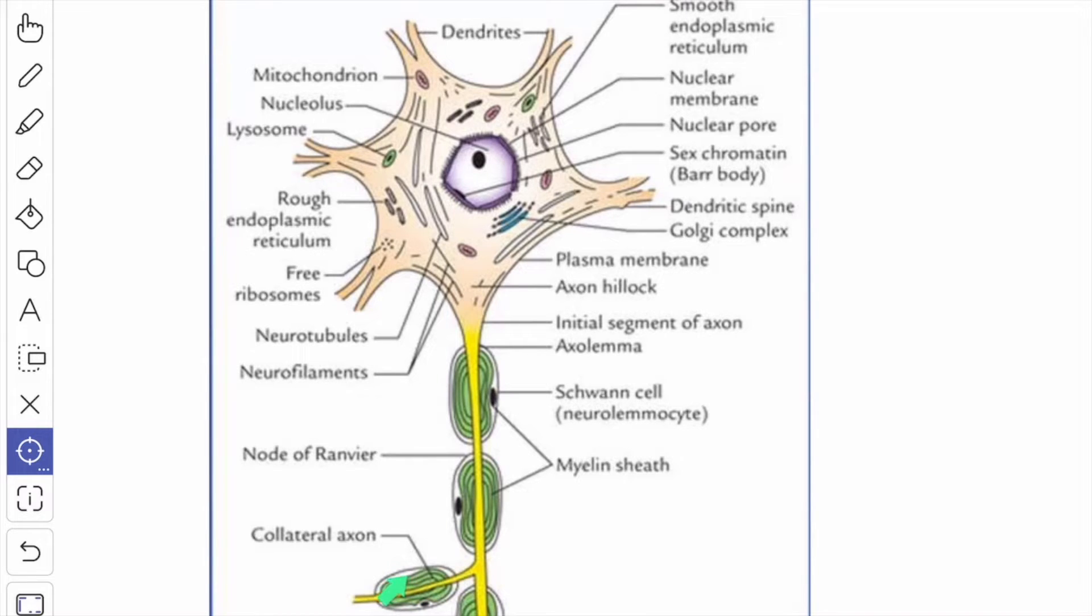Collateral branches arise at right angles at the sides of the axon, especially at the nodes of Ranvier in a myelinated nerve.